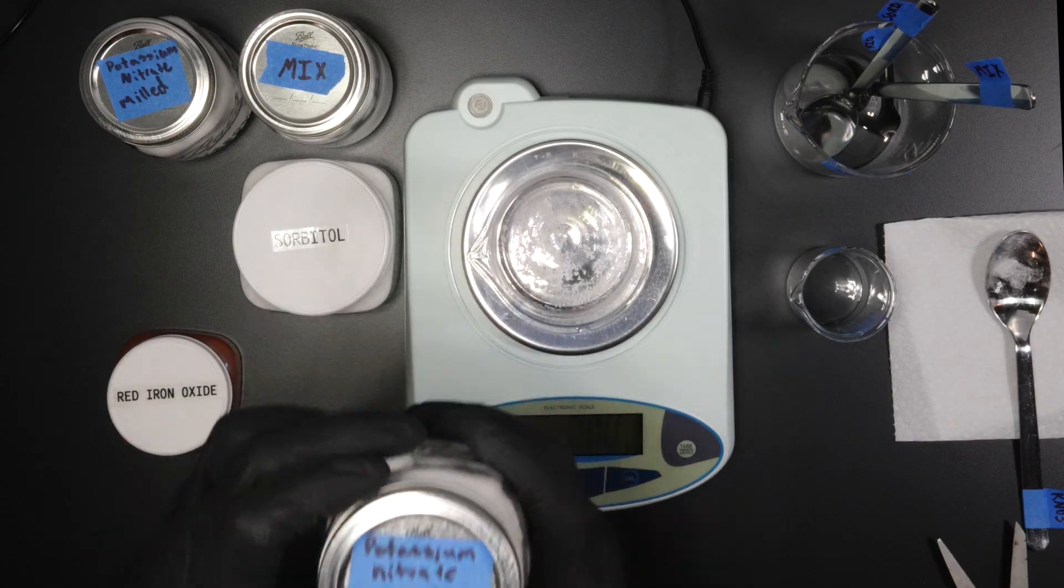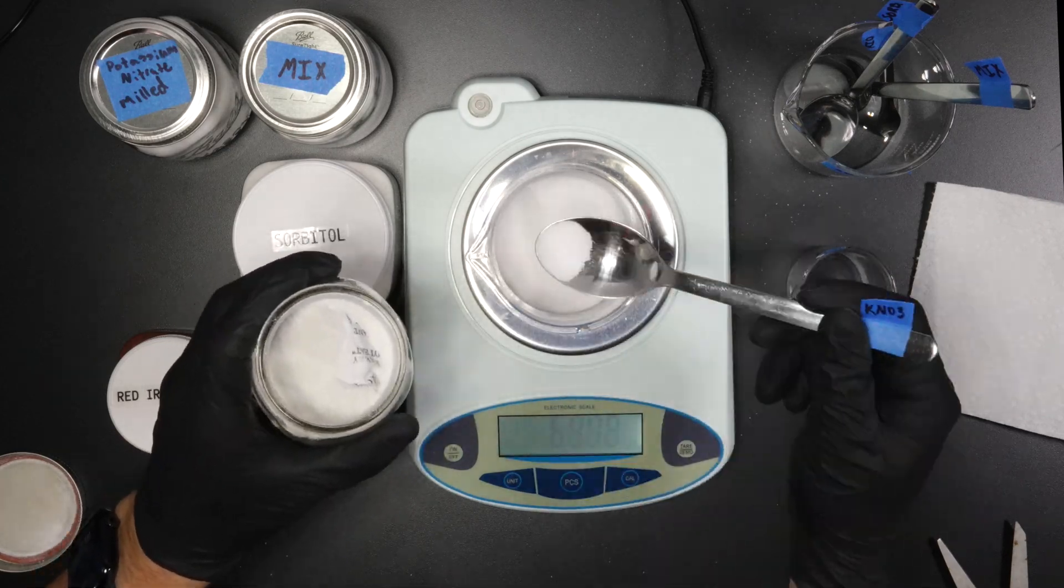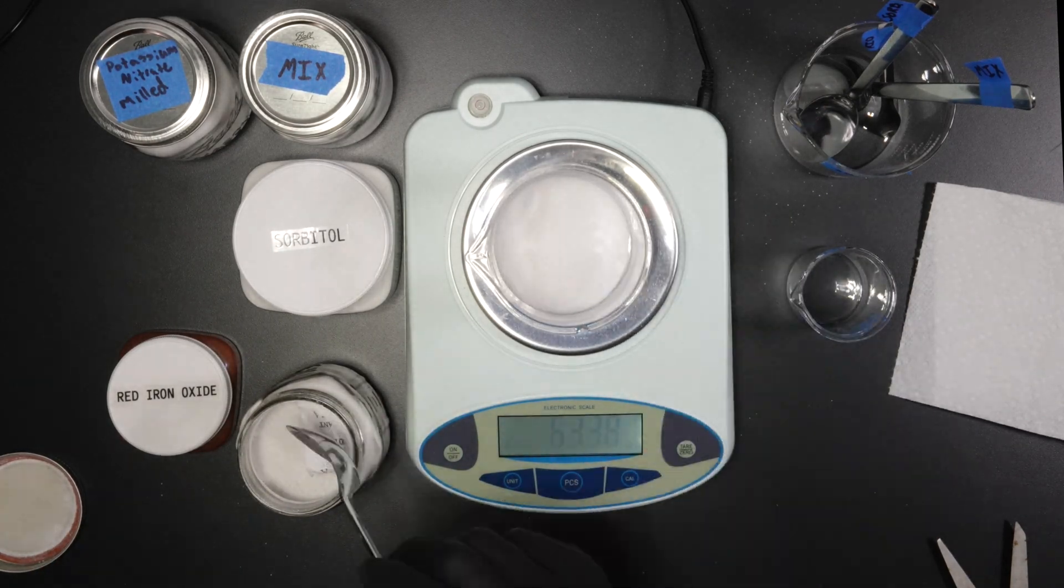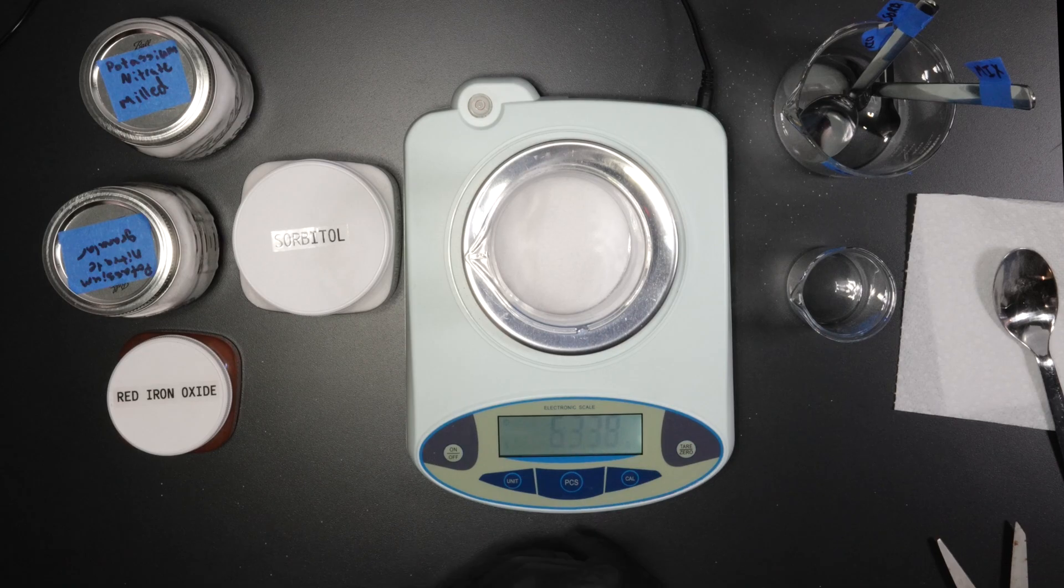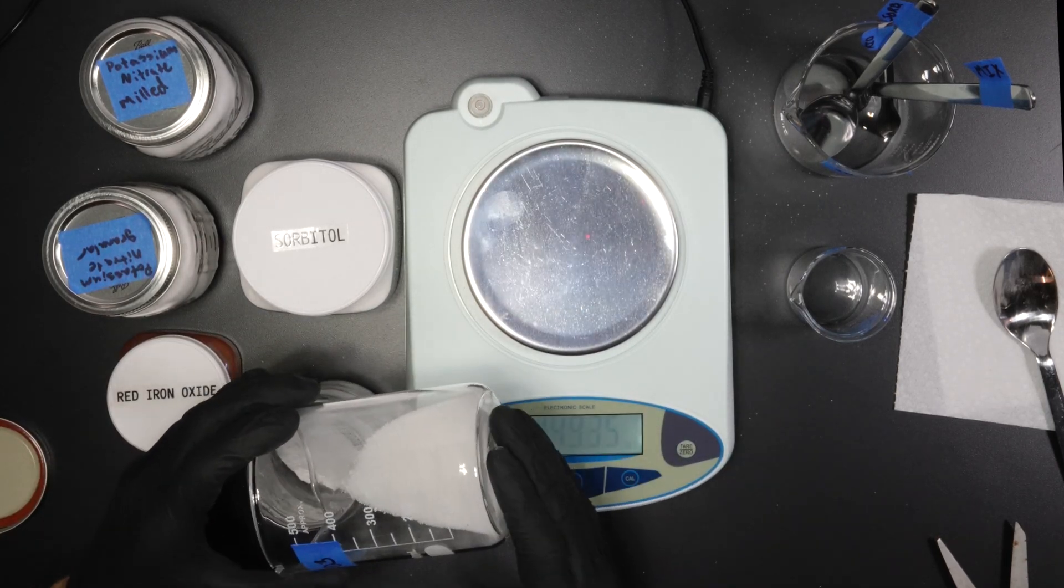Next, I measure out 63.38 grams of granular potassium nitrate. Since it also clumps up from moisture, I keep silica gel packets in both containers for storage. Then I add it to the mixing jar.